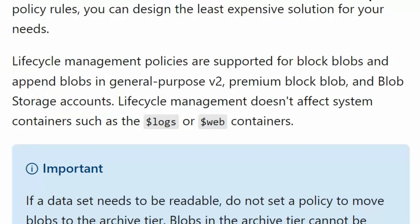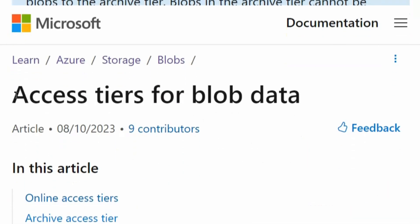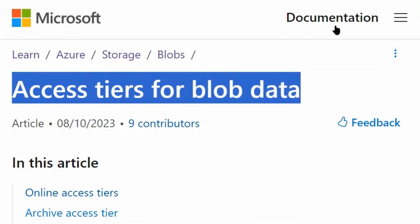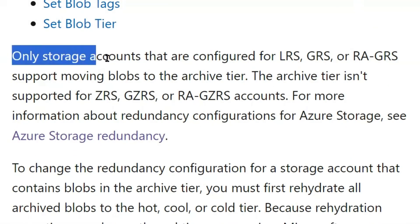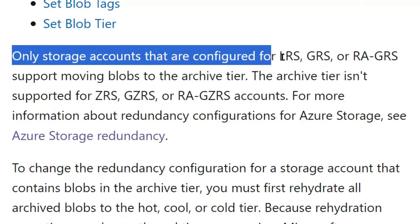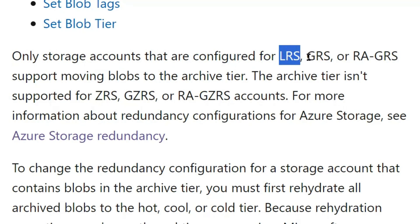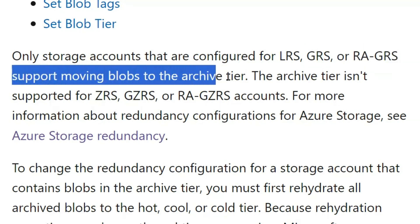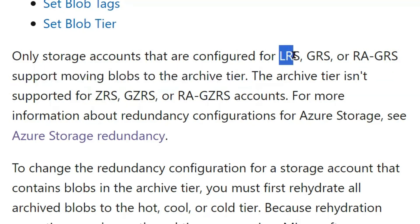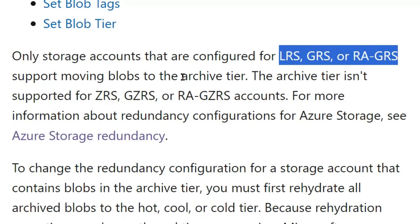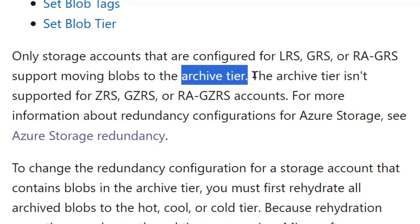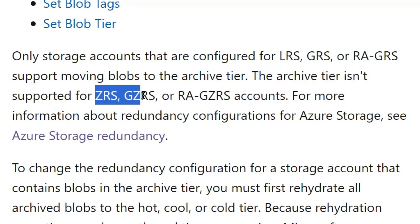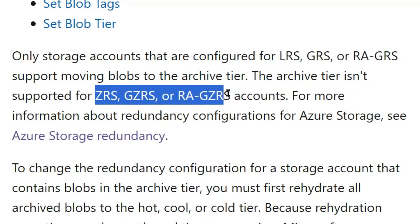Now let's go to the next page for archive access tier. We are on the 'Access tiers for blob data' page in the documentation site. Only storage accounts configured for locally redundant storage (LRS), geo-redundant storage (GRS), or read-access geo-redundant storage (RA-GRS) support moving blobs to the archive tier. The archive tier is not supported for ZRS, GZRS, or RA-GZRS accounts.